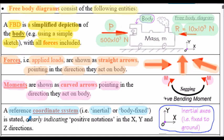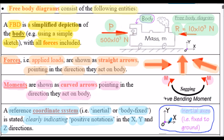For the coordinate system used, we have to clearly indicate the positive notations in the x, y, and also sometimes the z direction if it's a three-dimensional problem. For the illustration here on the right-hand side, for inertial axes, we're showing positive x values from left to right and positive y values vertically up.